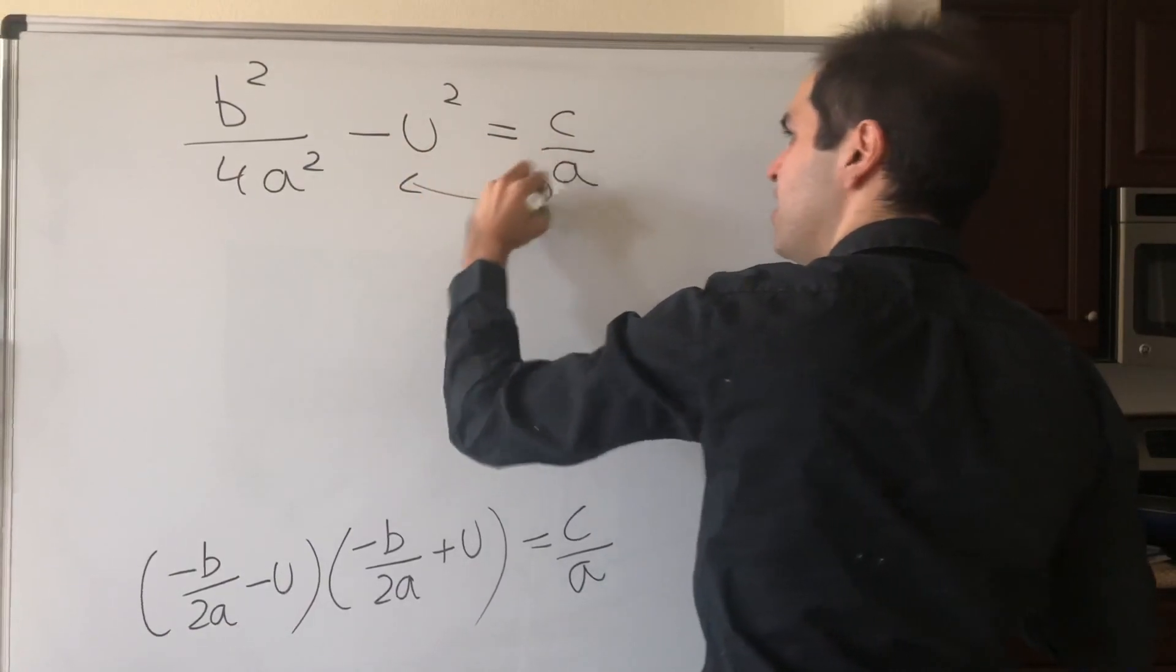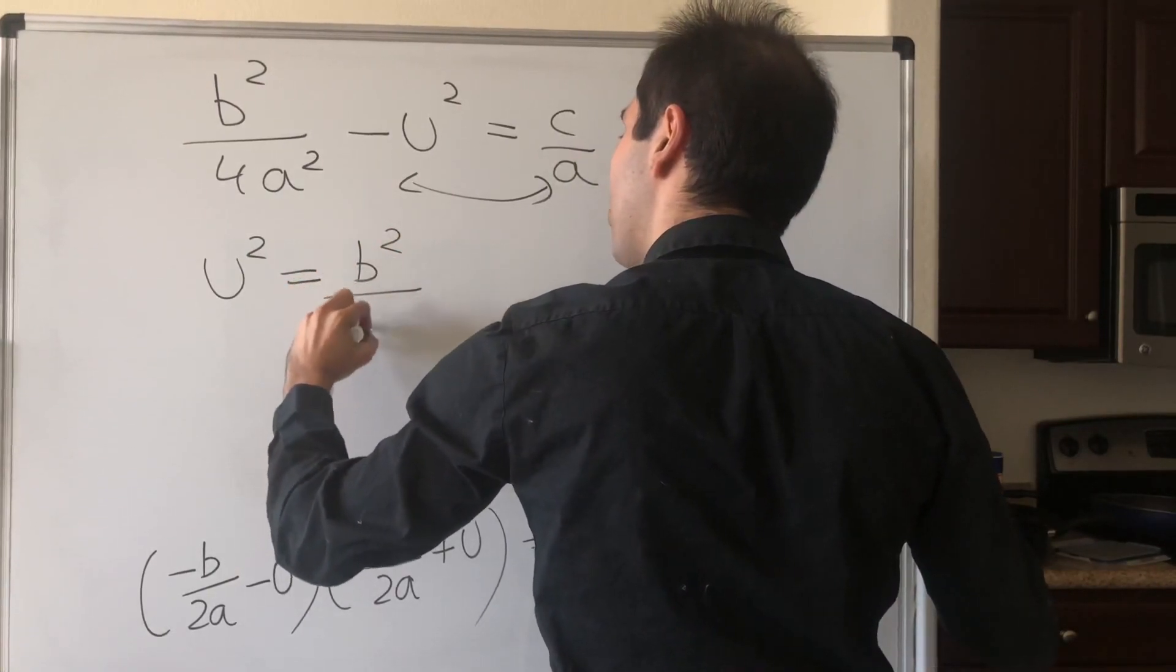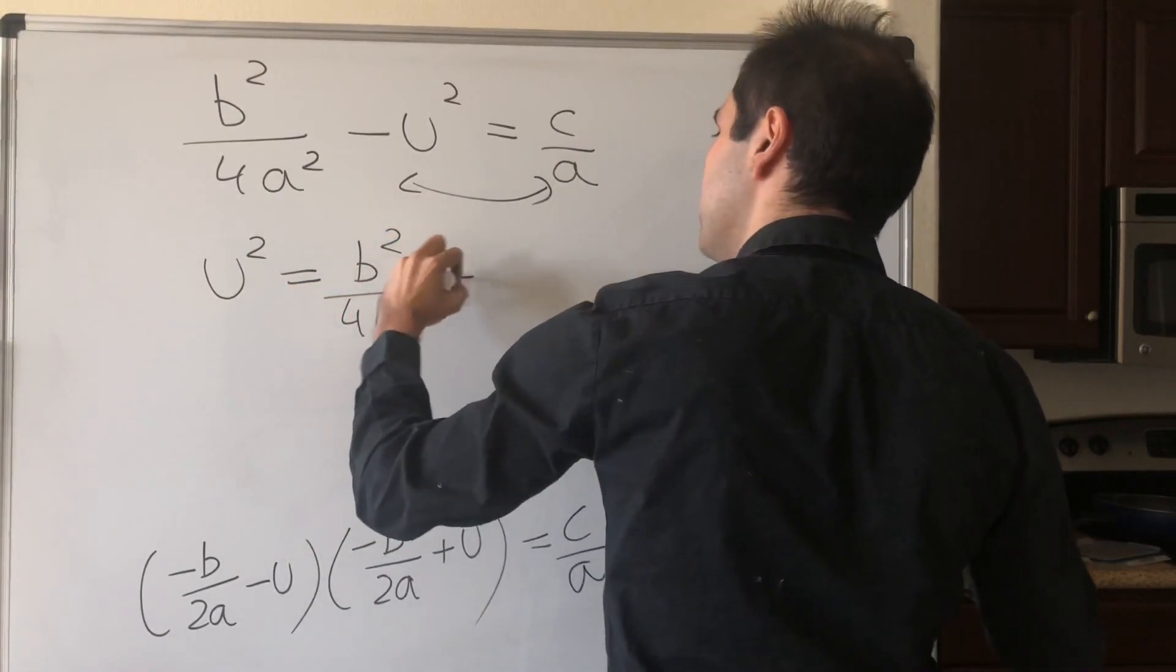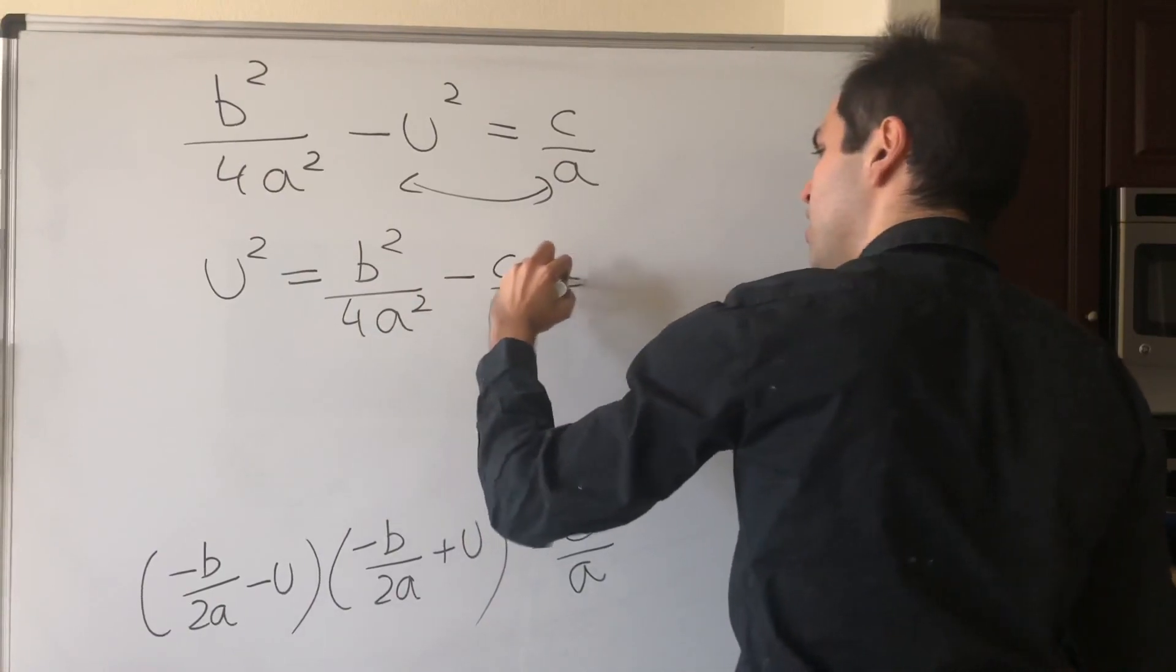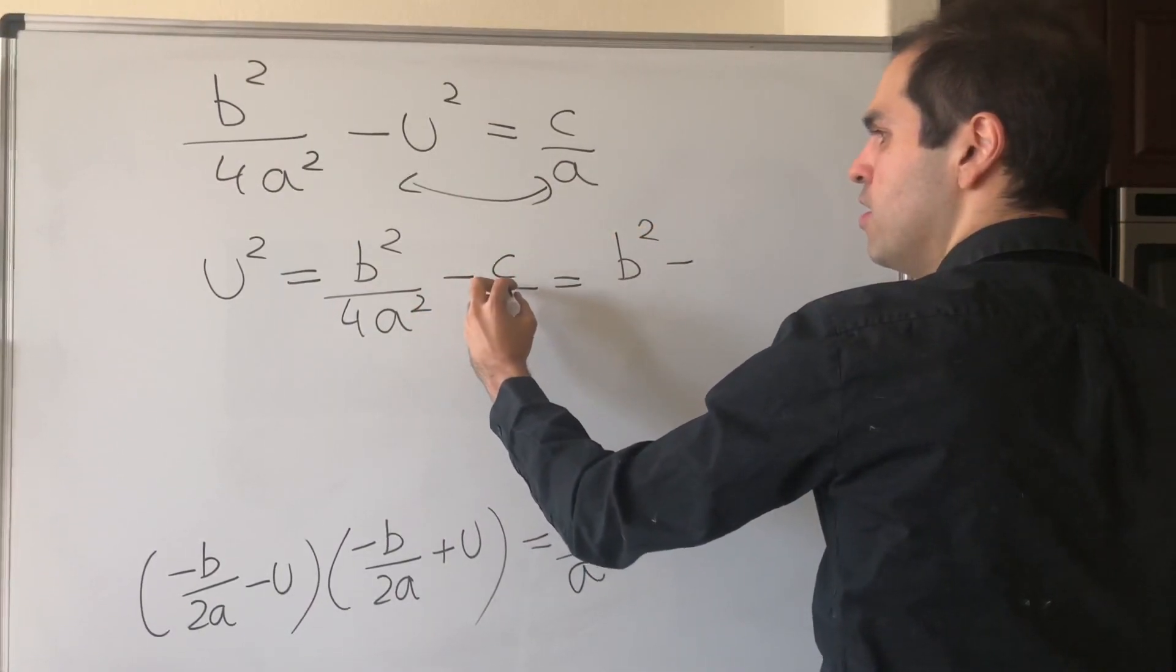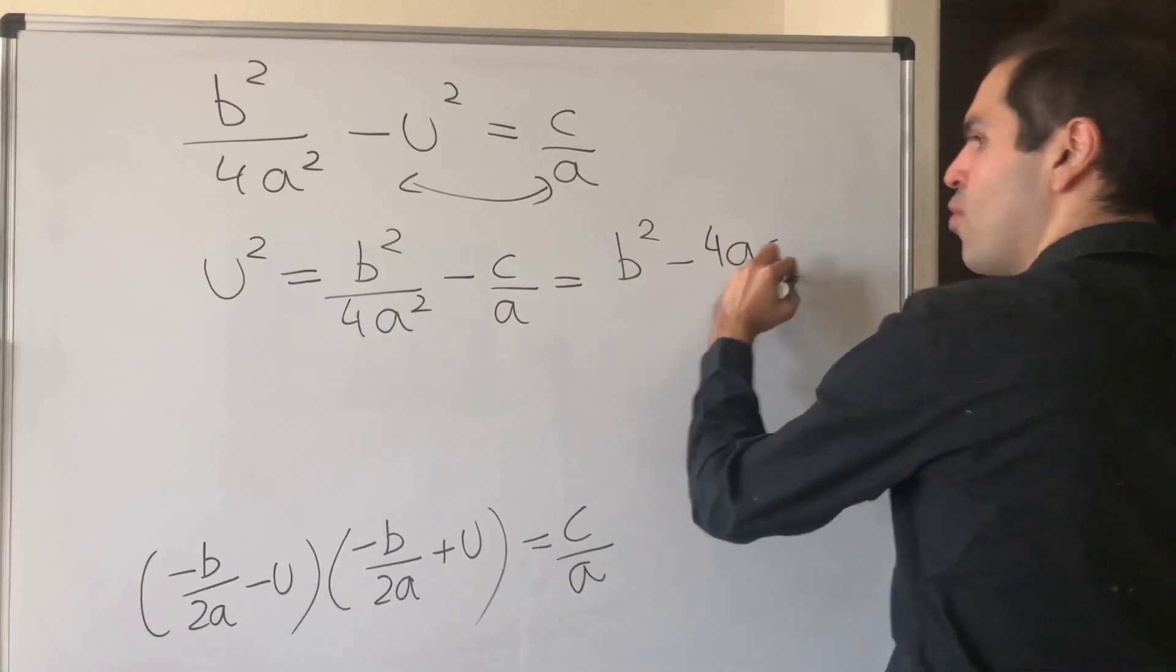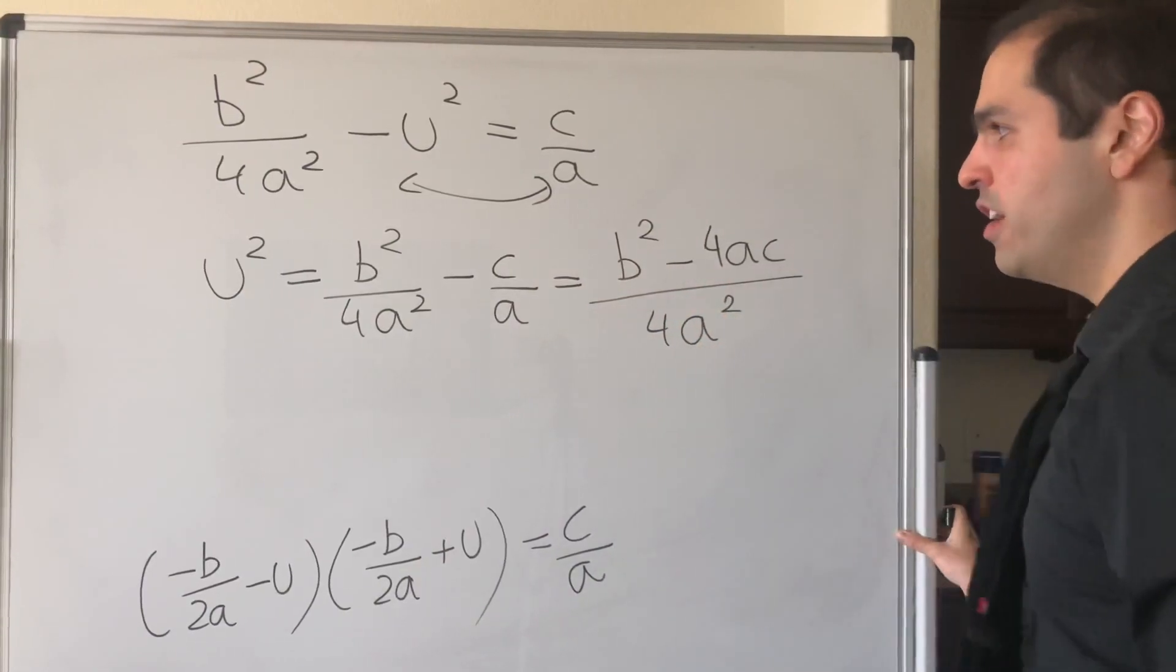Swap the two, and you get u² = b²/4a² - c/a, which becomes b² - 4ac over 4a².